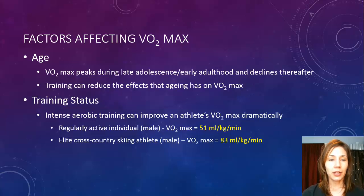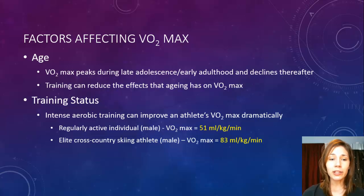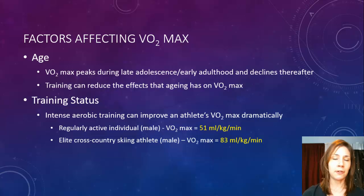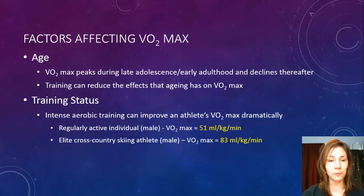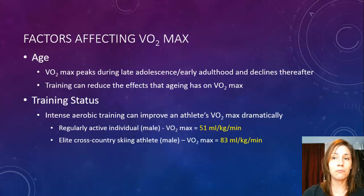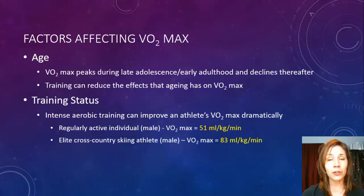Training status is the last factor. If you engage in intense aerobic training that will definitely improve your VO2max dramatically. For example, a regularly active male might have a VO2max of around 51 mL/kg/min, whereas an elite cross-country skier — considered one of the fittest types of athletes in the world in terms of aerobic endurance — can have a VO2max of about 83 mL/kg/min.